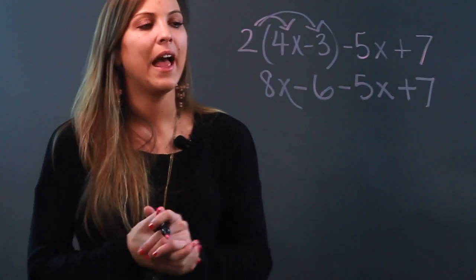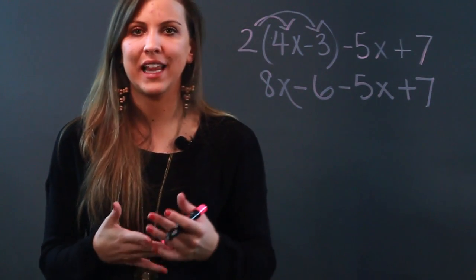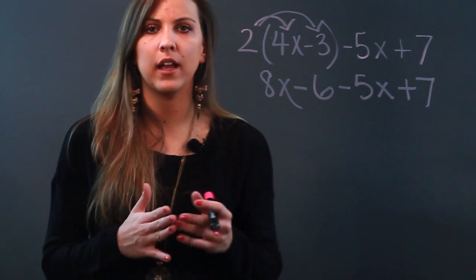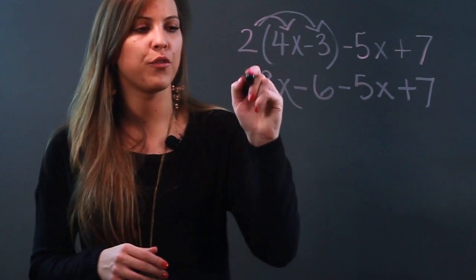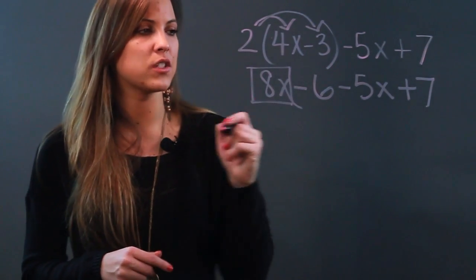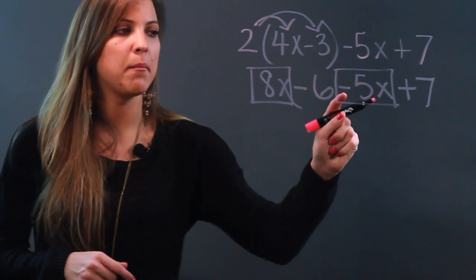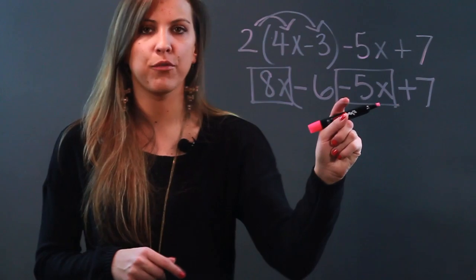Now I'm looking for similar terms or like terms, which are terms that have the same variable and the same exponent. For 8x, I see a like term is negative 5x. The important thing is to make sure you carry the sign that's before the term.